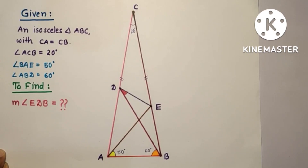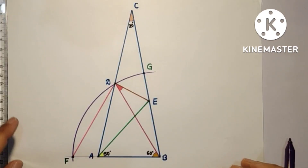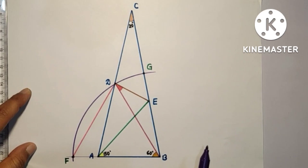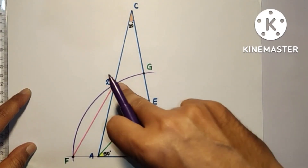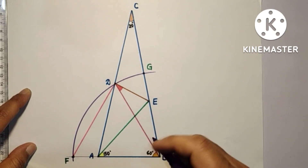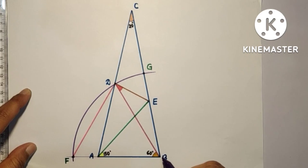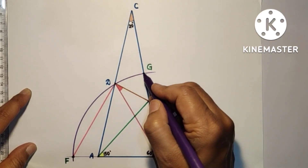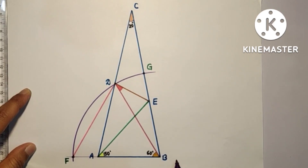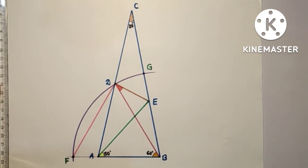There are many methods to solve this problem, but I have done whatever I found easier. We have to construct some extra things. Here we have constructed, taking B as the center and BD as the radius, an arc which intersects the BA extended line at F and BC at the point G.